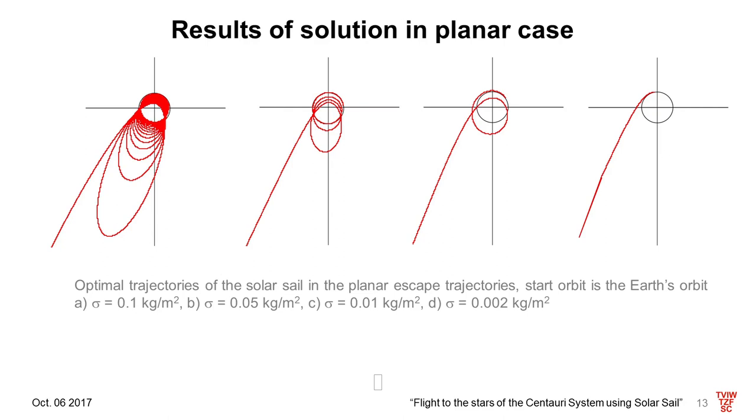The numerical results for the planar case are shown on the several next slides. These results describe the escape mission for solar sail spacecraft with different mass per area parameters. In this slide, we can see the optimal trajectory of the solar sail with the mass per area parameter one-tenth, five-hundredths, one-hundredth, and two-thousandths. It can be seen the spacecraft approaches the sun at the initial stage that allows to accelerate and gain the maximum velocity. The larger the mass per area parameter, the closer the spacecraft approaches the sun.